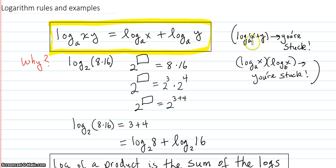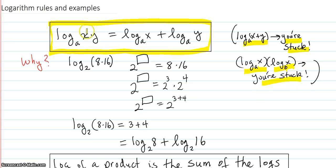If you see variables added inside the log, you're stuck. And if you see a multiplication of two different base logs, you're also stuck. It's just the product that has to be inside and it breaks up into a sum. You can also work these rules backwards — if you have a sum of logs with the same base, you can contract it back to the log of the product.